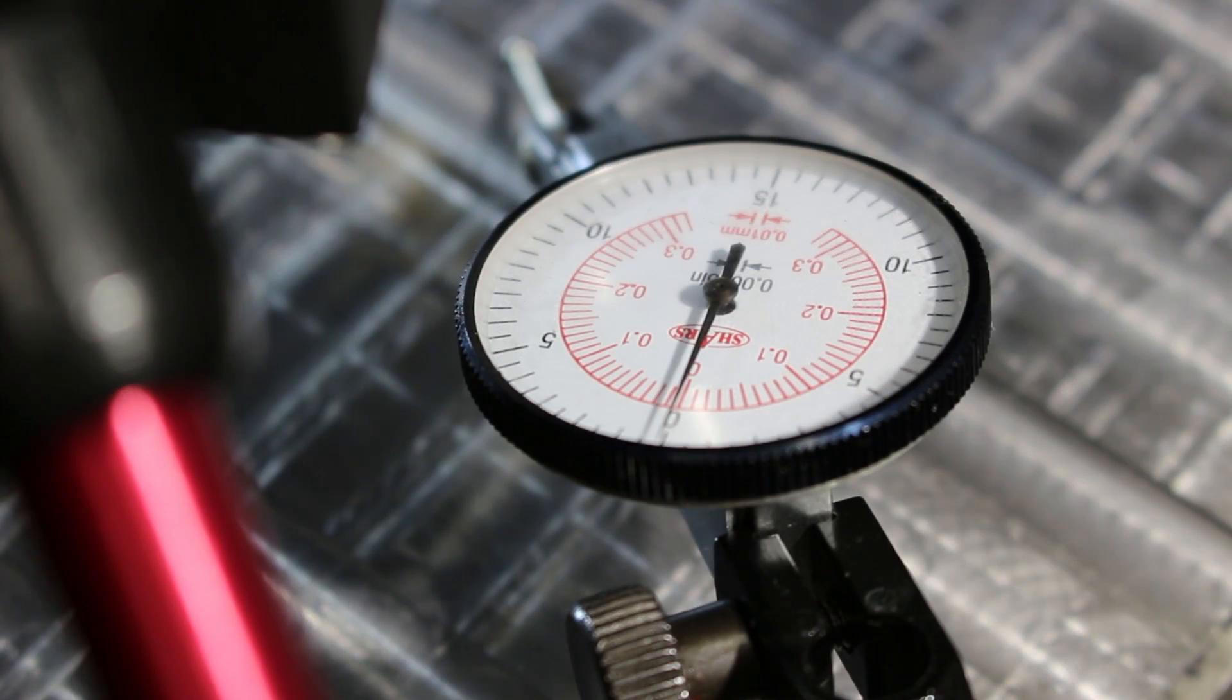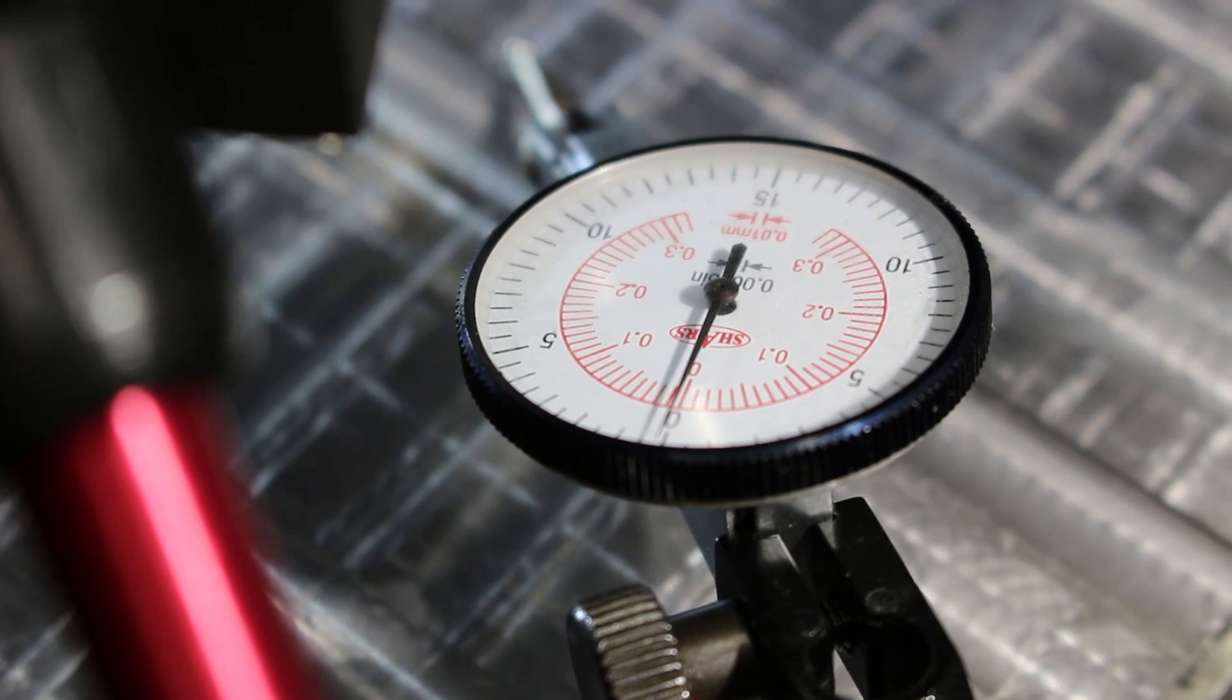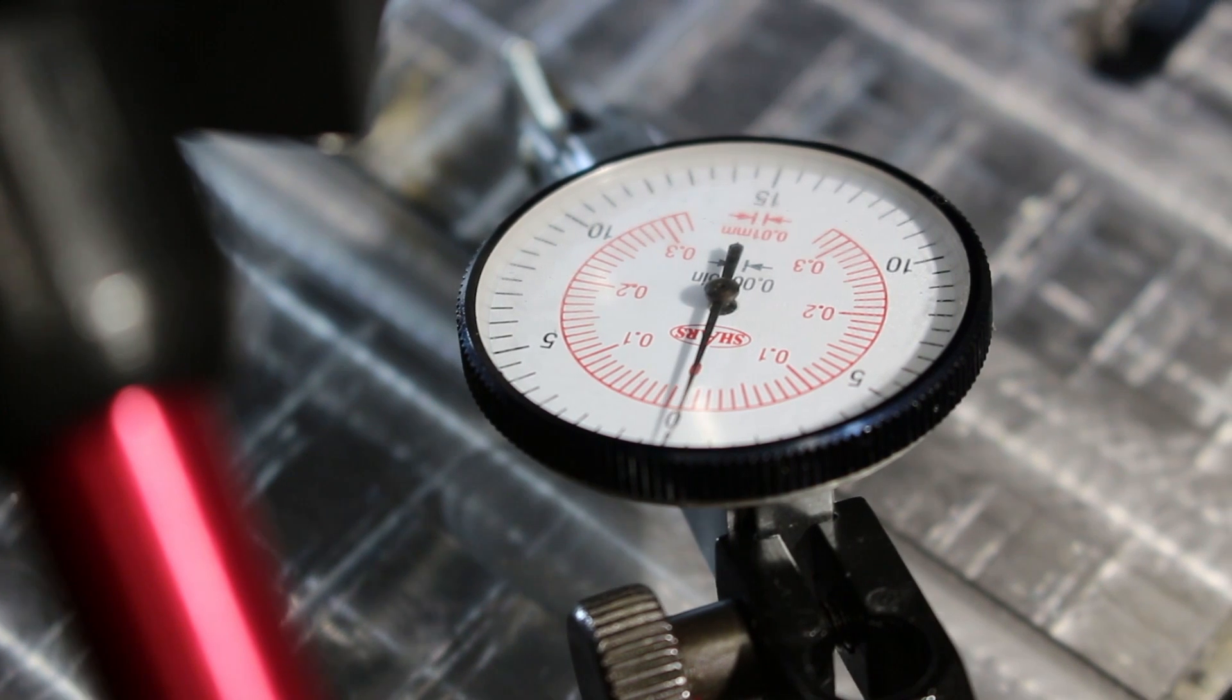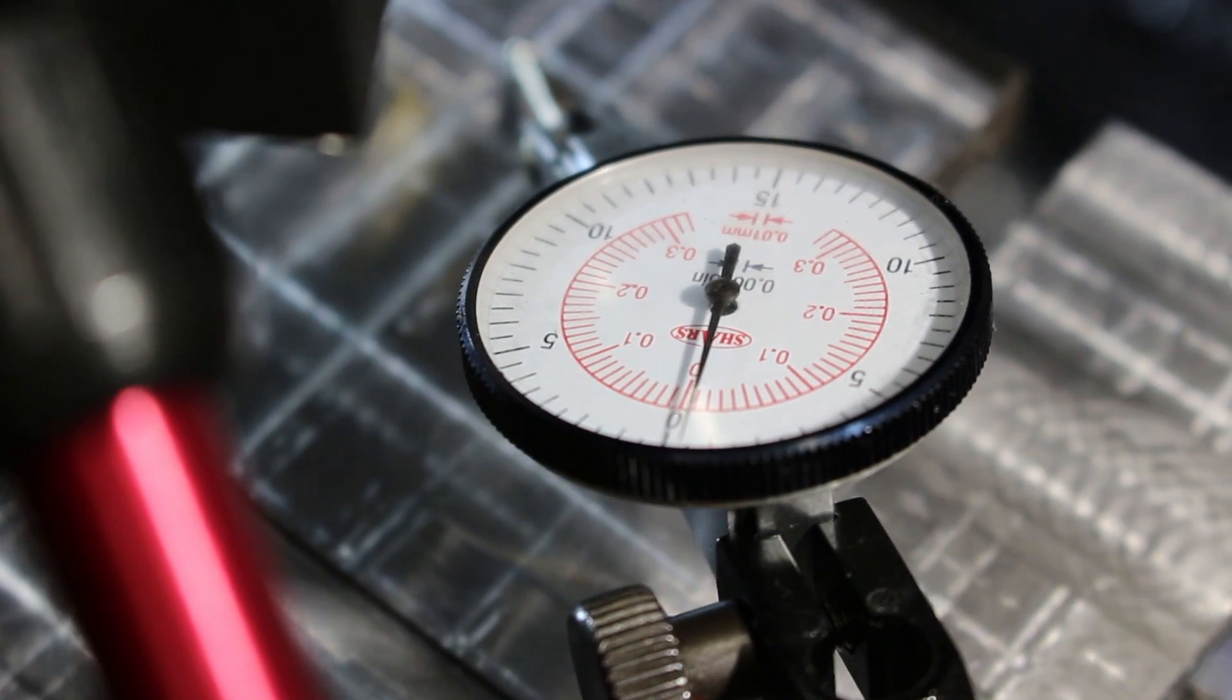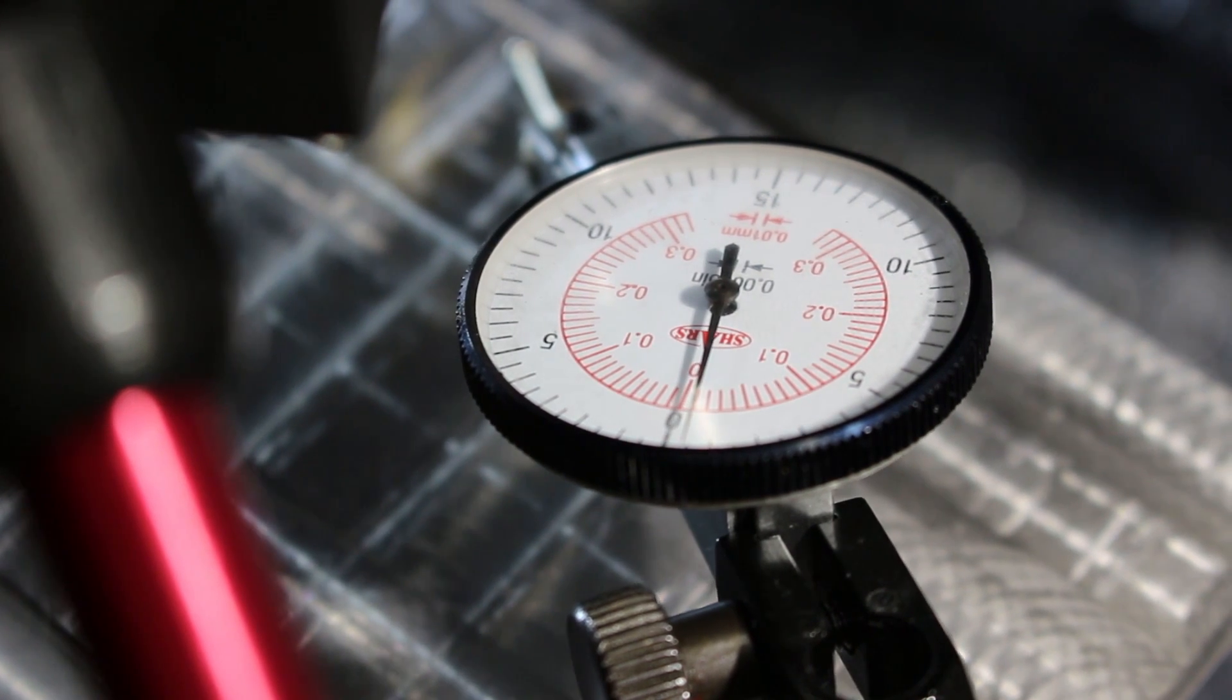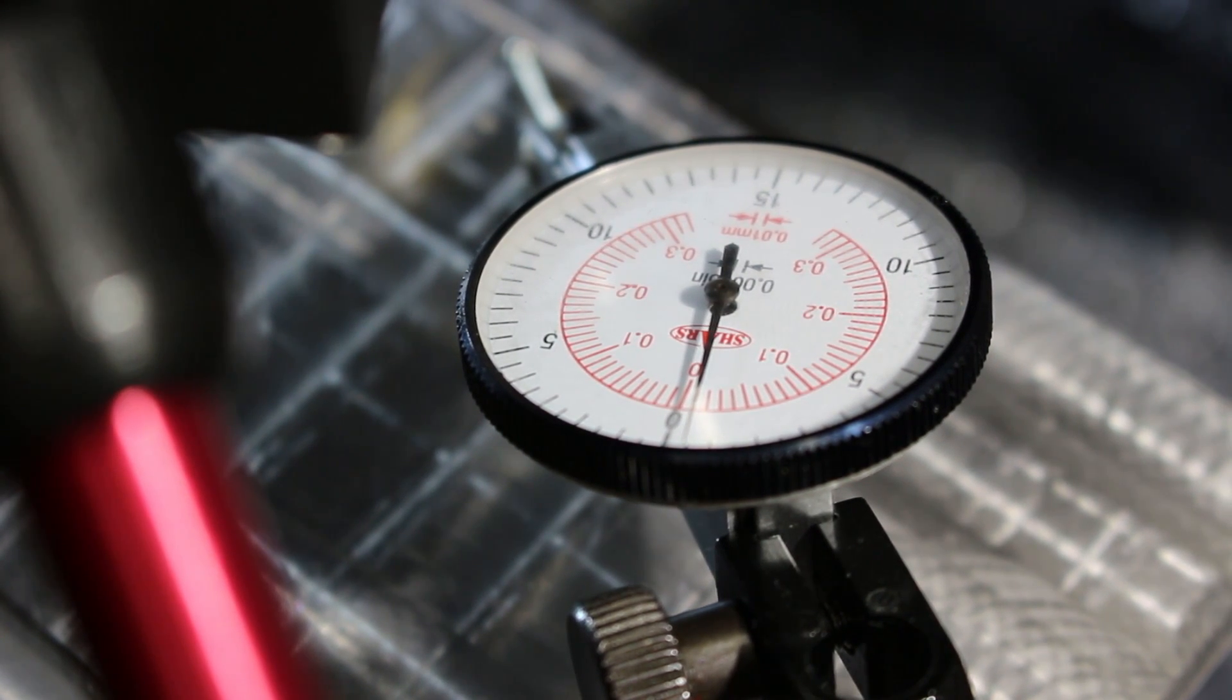Before I remove the part from the bed of the mill, I want to do one last check for flatness across its width. In particular, I want to make sure that cutting that alignment slot didn't allow it to curve additionally as some tension was released in the steel. So I've got a test indicator zeroed out about in the center of the plate. And as I move it from the center to the outside edge, it's down about four ten thousandths. And if I go all the way to the outside edge, then it's up to about five ten thousandths. It's slightly less on the other side, about four ten thousandths, and I can certainly live with that.